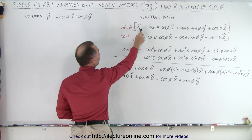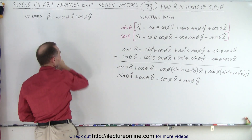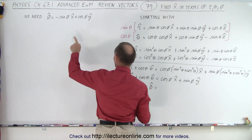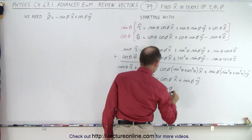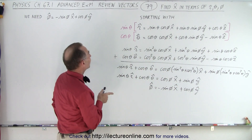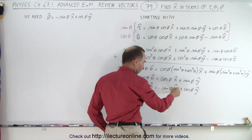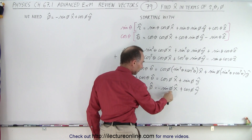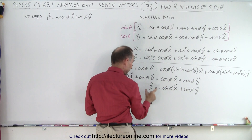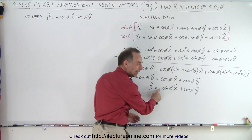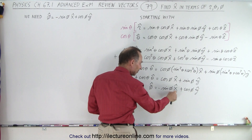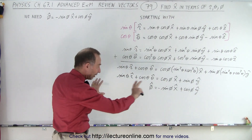We're trying to isolate the x unit vector. We started with the r and theta unit vector definitions; now we'll include the phi unit vector equation: phi unit vector equals minus sine phi times the x unit vector plus cosine phi times the y unit vector. The idea is to multiply the top equation by cosine of phi and the bottom by sine of phi, then subtract, so we get cosine squared phi plus sine squared phi — which is 1 — times the x unit vector.